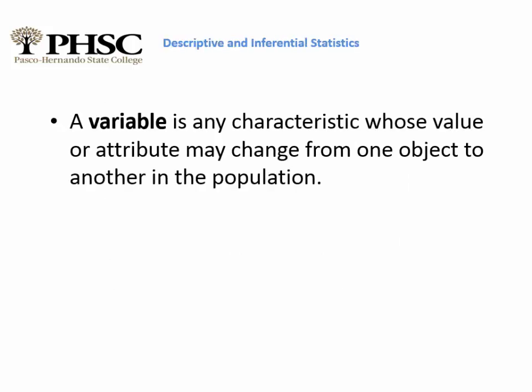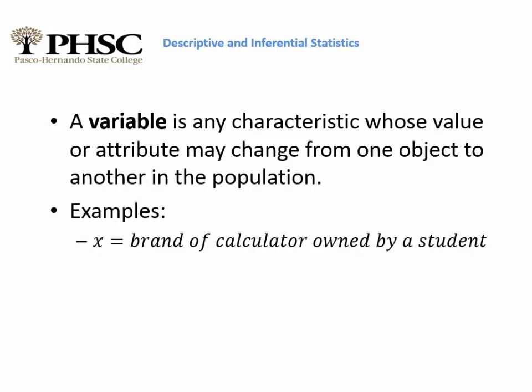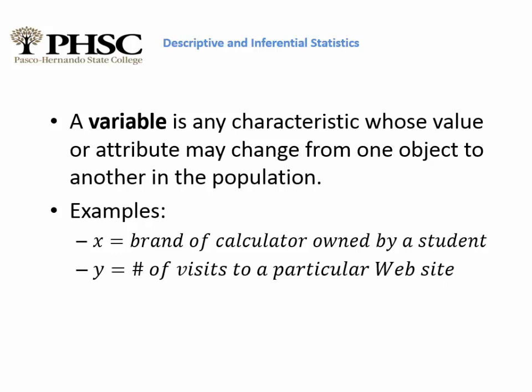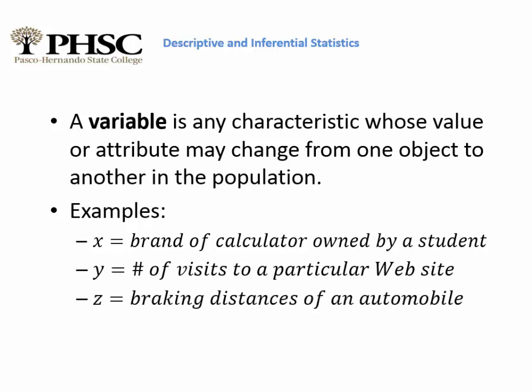The first thing we're going to talk about is a variable. A variable is any characteristic whose value or attribute may change from one object to another in the population. For example, if I'm collecting information about a group of people, variables could include their level of education, age, gender, or how much money they make in a year. So X might equal the brand of calculator owned by a student, Y the number of visits to a website, or Z the braking distances of an automobile.